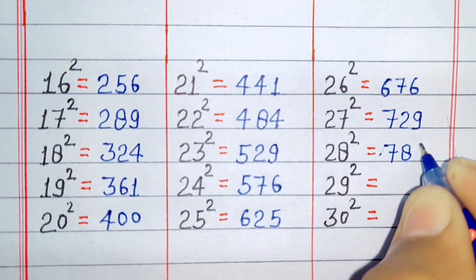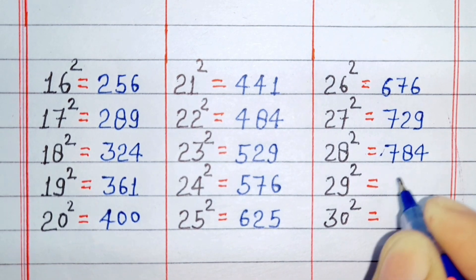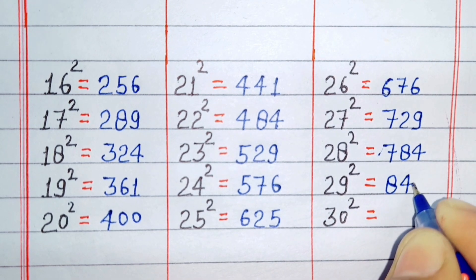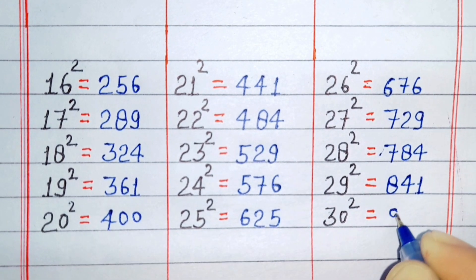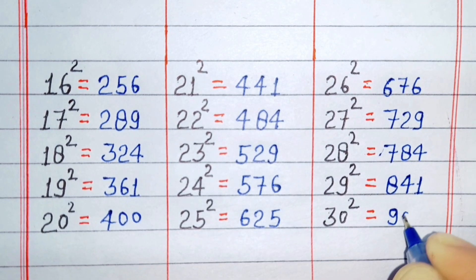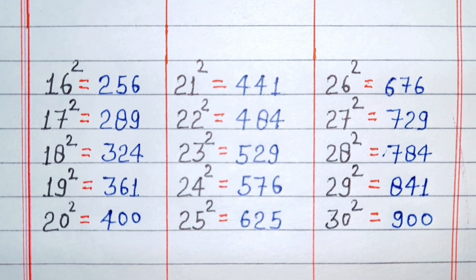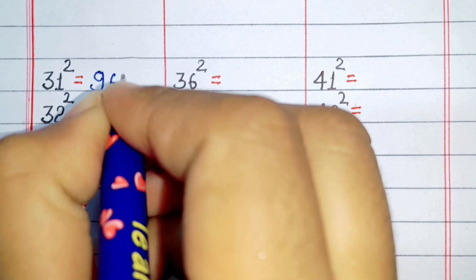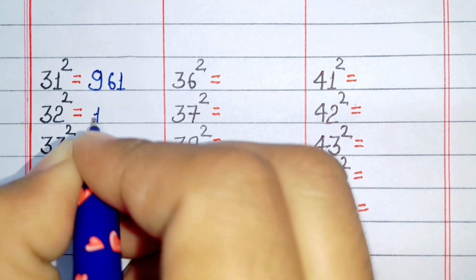Square of 28 is 784. Square of 29 is 841. Square of 30 is 900. Square of 31 is 961.